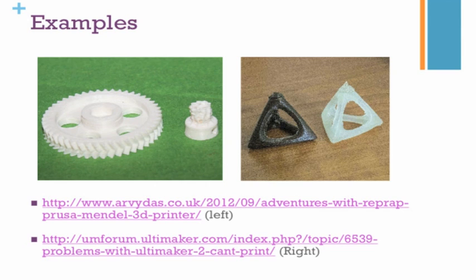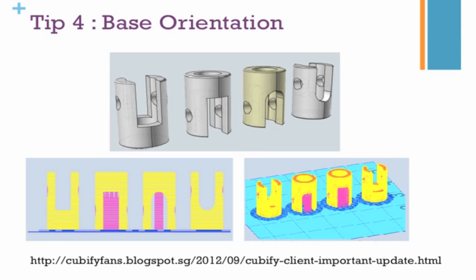Tip number four is base orientation. You can see in the image that the same part is oriented differently and the design is slightly changed as well. The way you orientate the part will determine how much support material is needed and how well your part adheres to the base plate. If your part doesn't adhere well to the base plate it may warp, causing a failed print — so it's very important to orient your part to minimize support and ensure good adhesion.